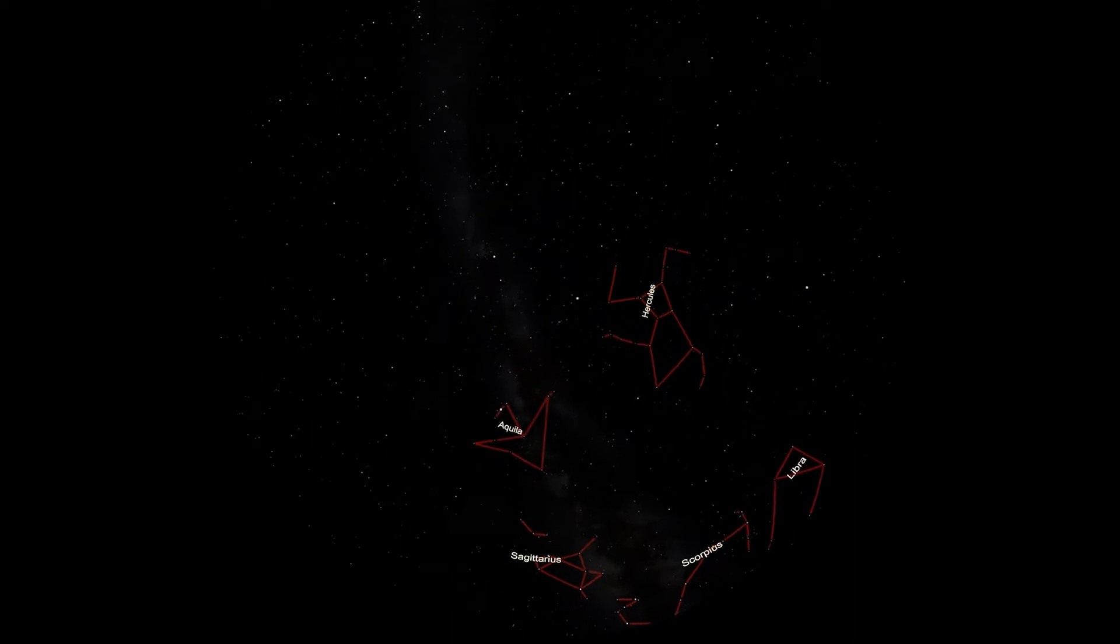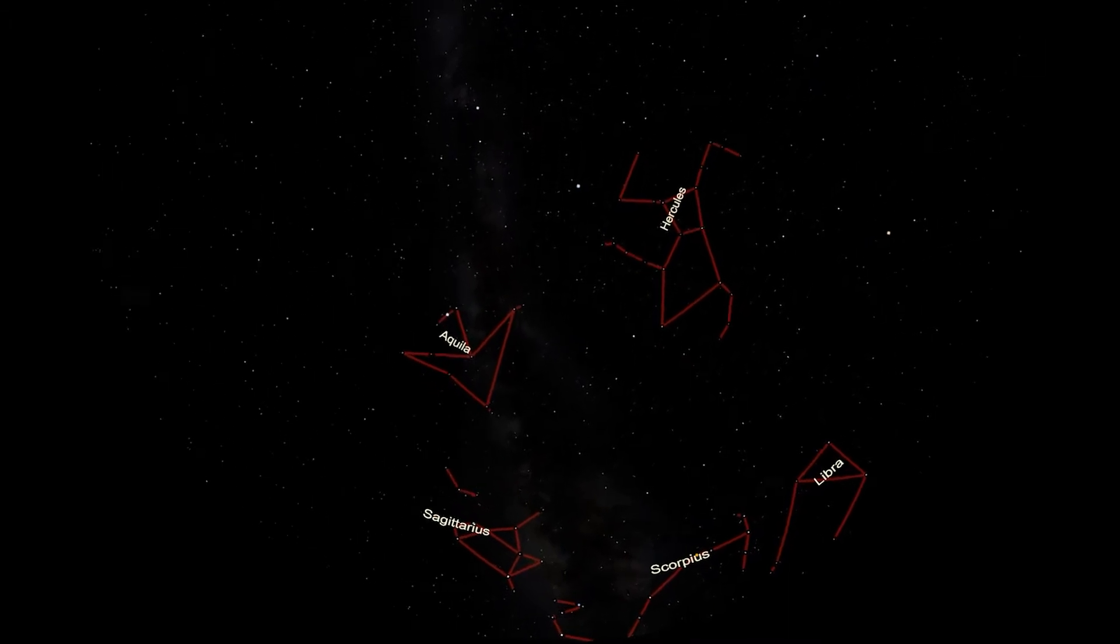Previously in this series, we've examined Hercules the Strongman, Scorpius the Scorpion, Sagittarius the Archer, Libra the Scales, and Aquila the Eagle. But there's this big gap here in the middle of this ring of constellations.